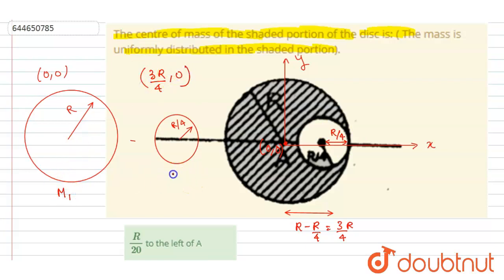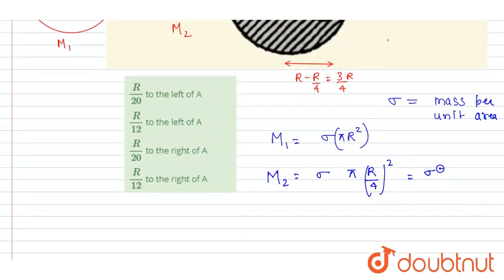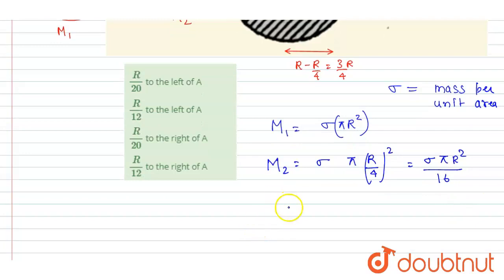And let us say the masses of the two are m1 and m2. Since it is uniformly distributed, I can write mass 1 equals sigma pi R squared, where sigma is the mass per unit area. I can also write down the mass of the two as mass per unit area into area. Here it will be pi (R by 4) whole squared. So from here you can see that m1 is 16 times m2.